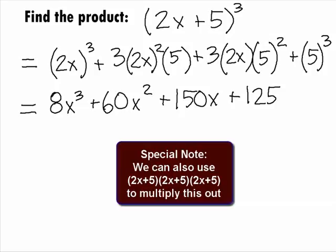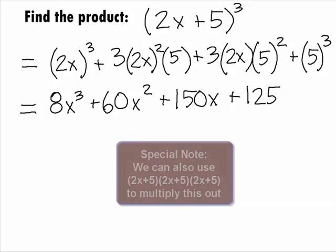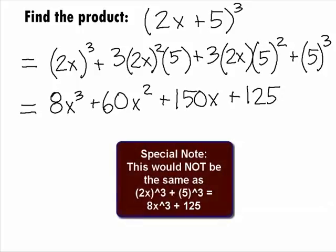Note that another way to approach this problem is to expand it out as 2x plus 5 times 2x plus 5 times 2x plus 5 and multiply that out. Note that this would not be the same as cubing each separate term and getting 8x cubed plus 125.